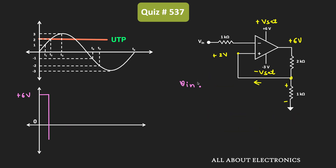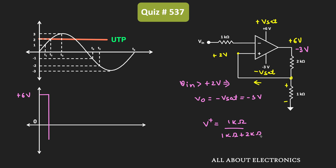When Vin is greater than +2V, Vout equals -Vsat, which is -3V. Applying the voltage divider rule again, V+ equals 1kΩ divided by (1kΩ + 2kΩ) times (-3V), which equals -1V. So whenever Vin exceeds +2V, Vout becomes -3V and V+ shifts to -1V.